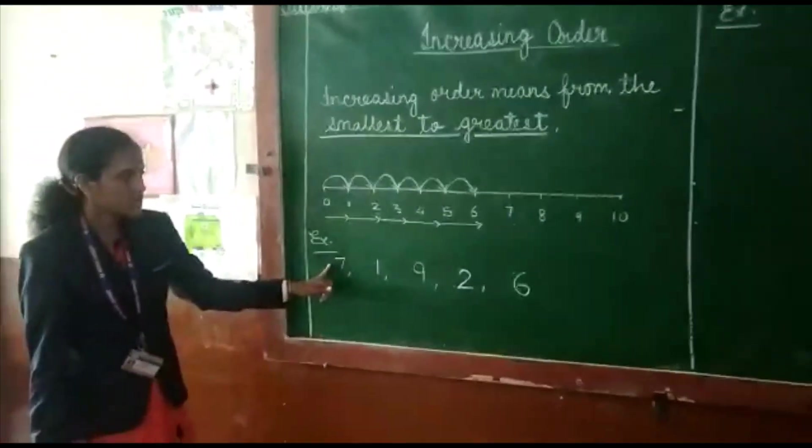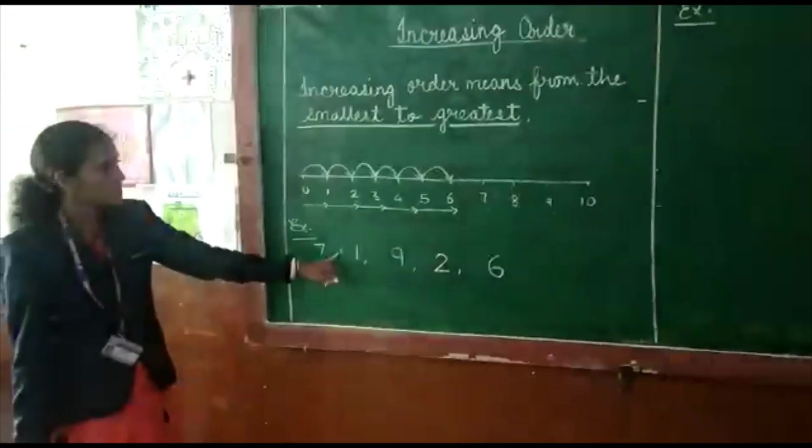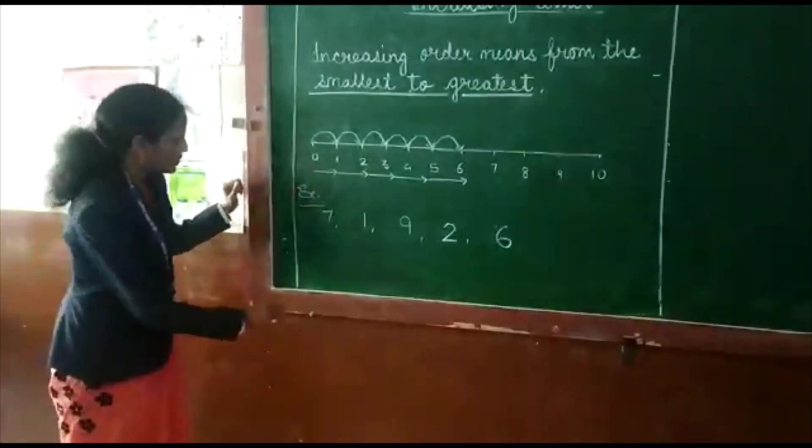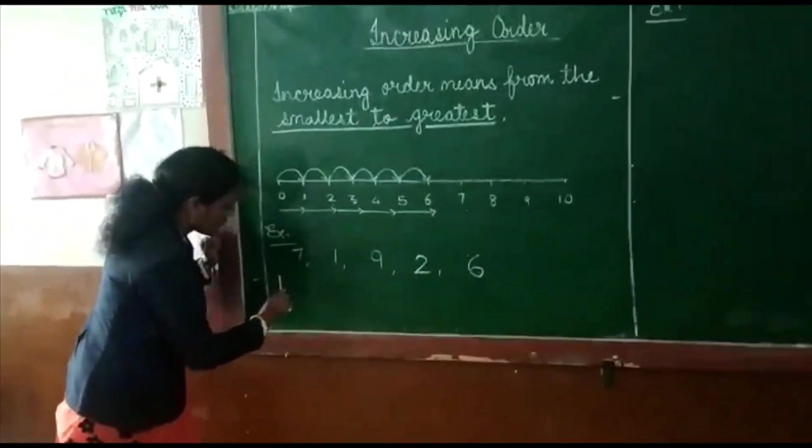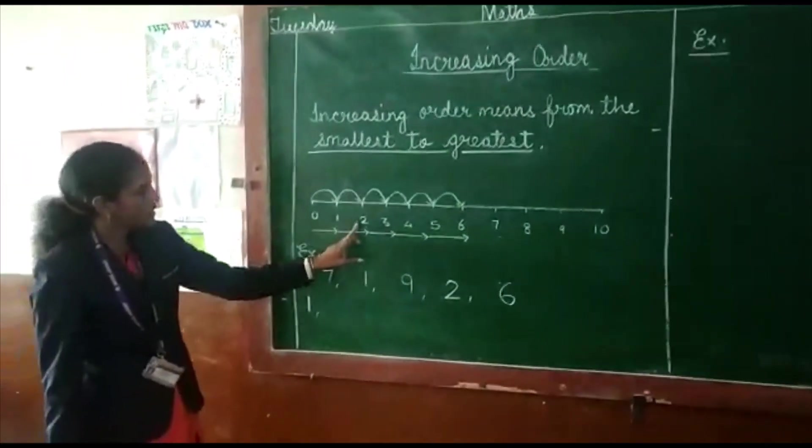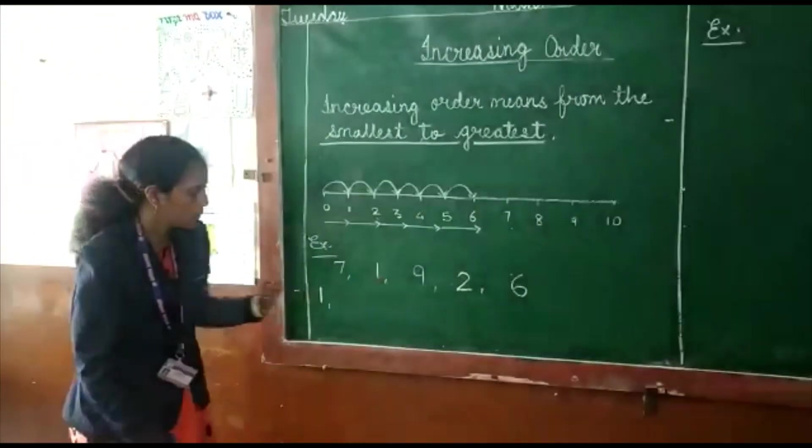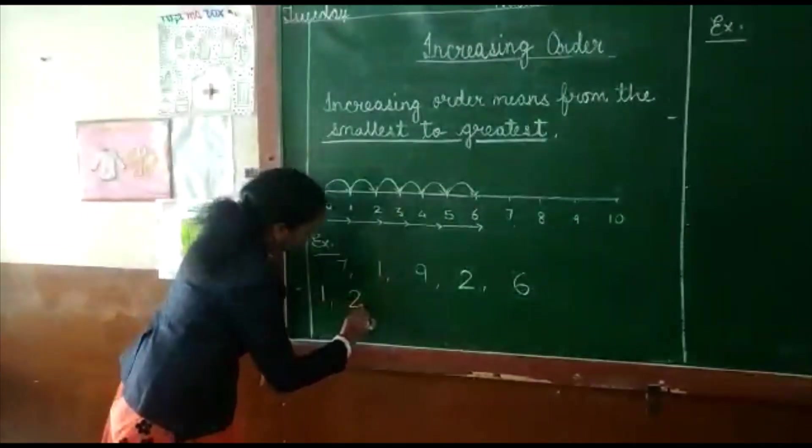Ab in numbers mein se number line pe, jo sab se chota number hai, jo number sab se pehle number line pe aata hai, hum us number ko sab se pehle likhenge. Smallest number is one. Ab number line pe aane wala dusra number hai two. We can write here two.